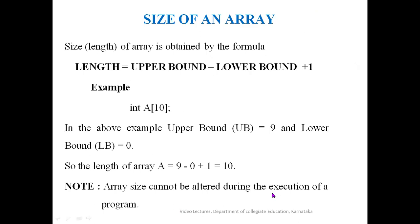To find the length of an array, the formula is: length = upper bound − lower bound + 1. In the example, the upper bound is 9 and the lower bound is 0, so the length of the array is 10. It is important to note that the array size must be fixed at the time of creation and cannot be altered during execution.